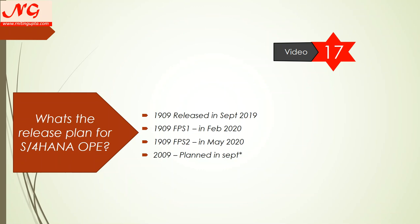Cloud releases come every quarter, but on-premise is on an annual basis. The latest release is 1909, which was available in September 2019, and the planned next release is September 2020. In between, SAP has released two Feature Pack Stacks: Feature Pack Stack one came in February and Feature Pack Stack two came in May.